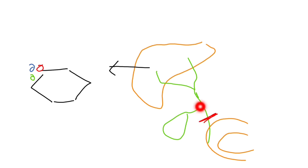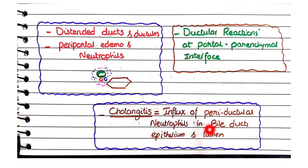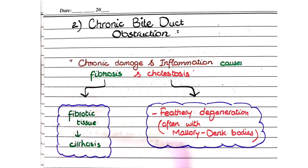To summarize the pathological features of acute bile duct obstruction with or without cholangitis: you will see distending ducts and ductules with periportal edema and neutrophils; you will see ductular reactions at the portal-to-parenchymal interface; and in cases of ascending cholangitis, neutrophils present at hepatic lobules influx into the bile duct epithelium and lumen.